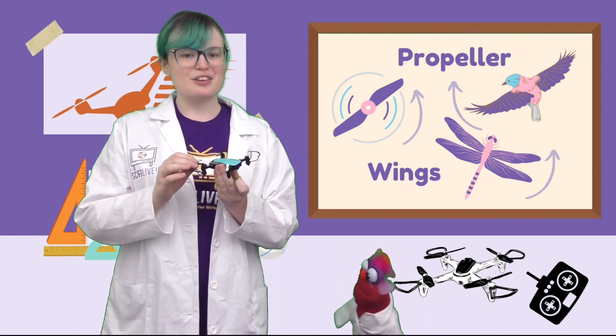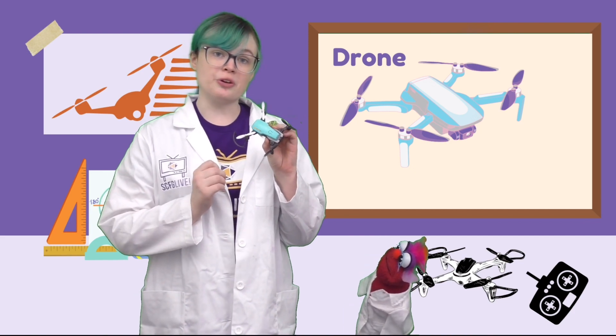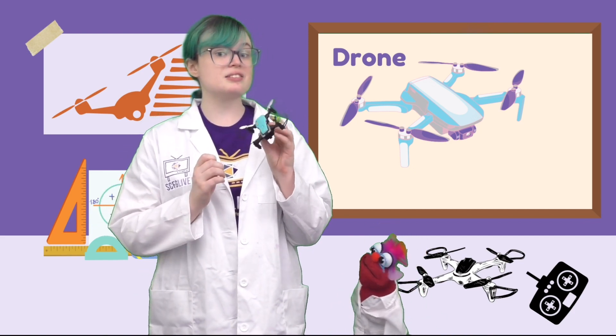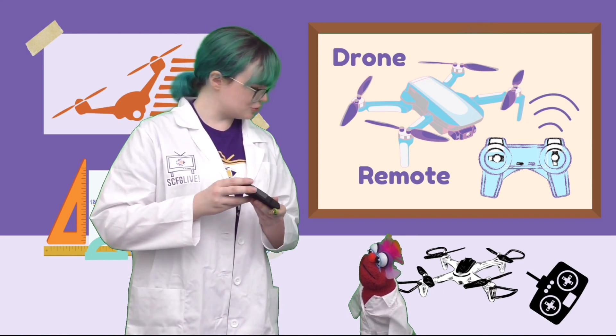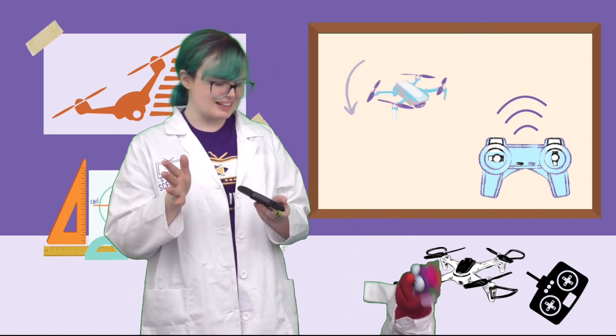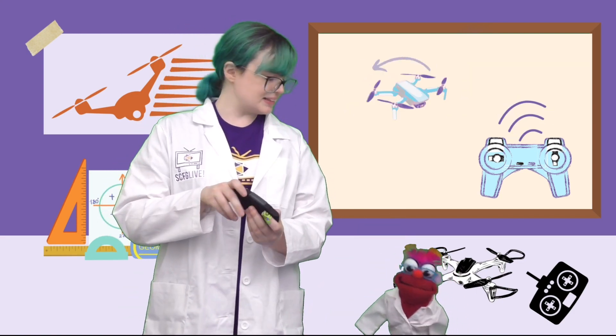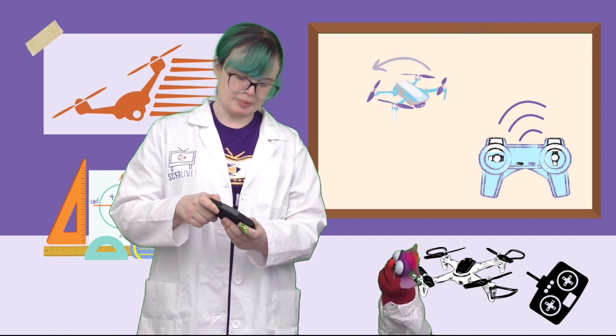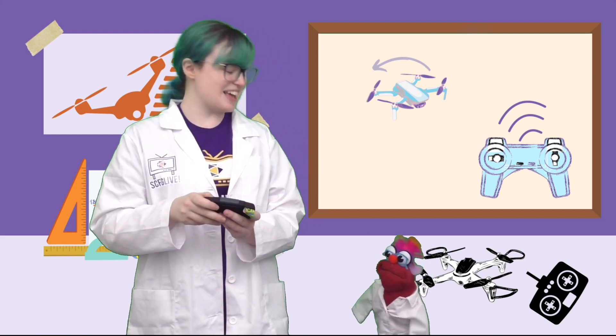You might have also noticed that Piper was controlling this using a remote controller. She made the drone go up, down, side to side, all with the click of buttons or joystick. So the drone is like a remote control car, but for the sky. That's exactly right.